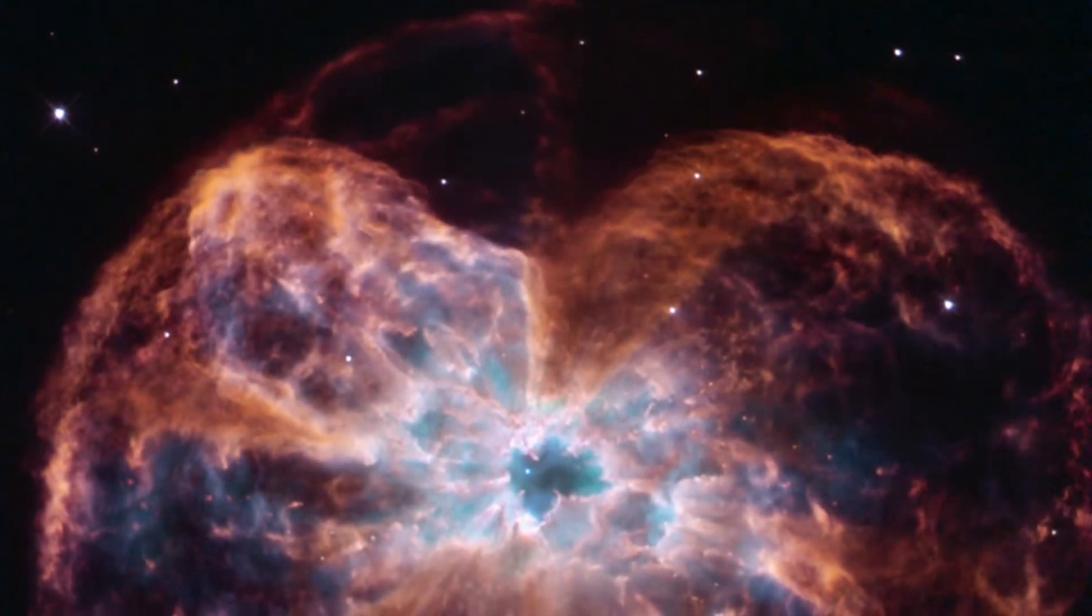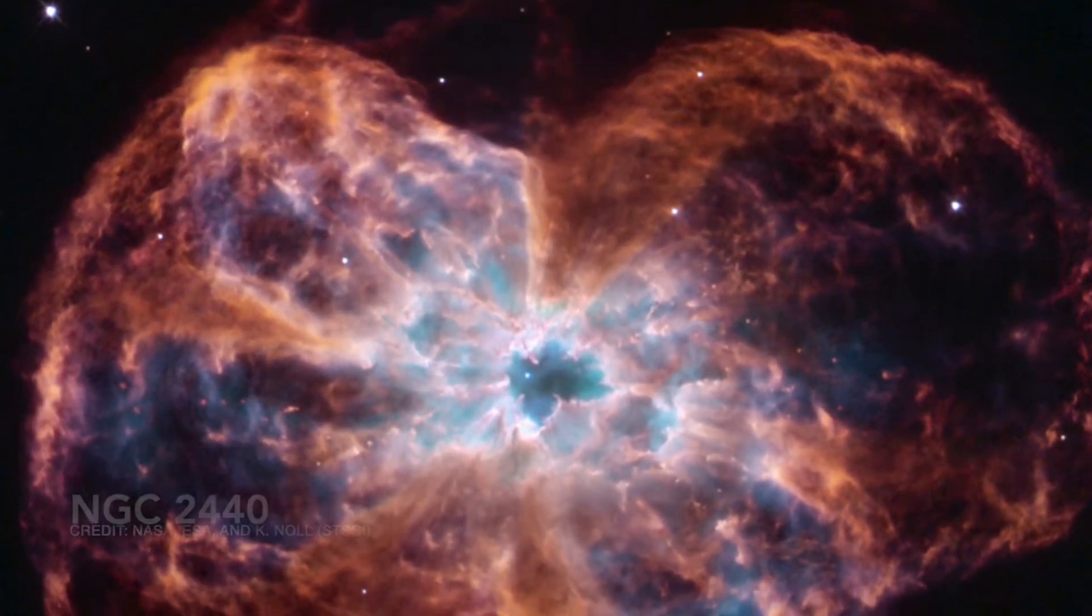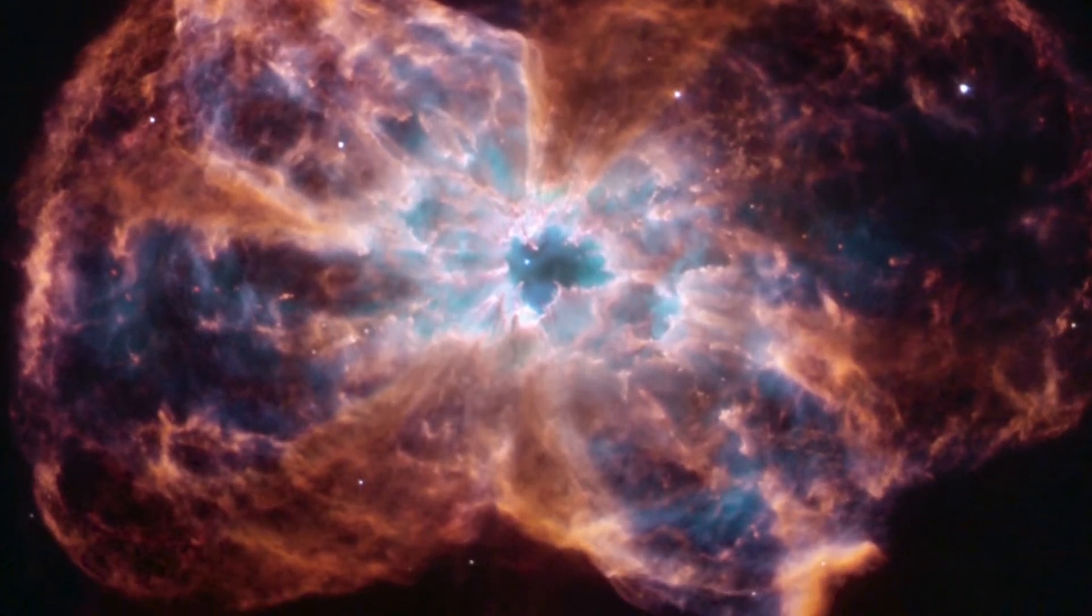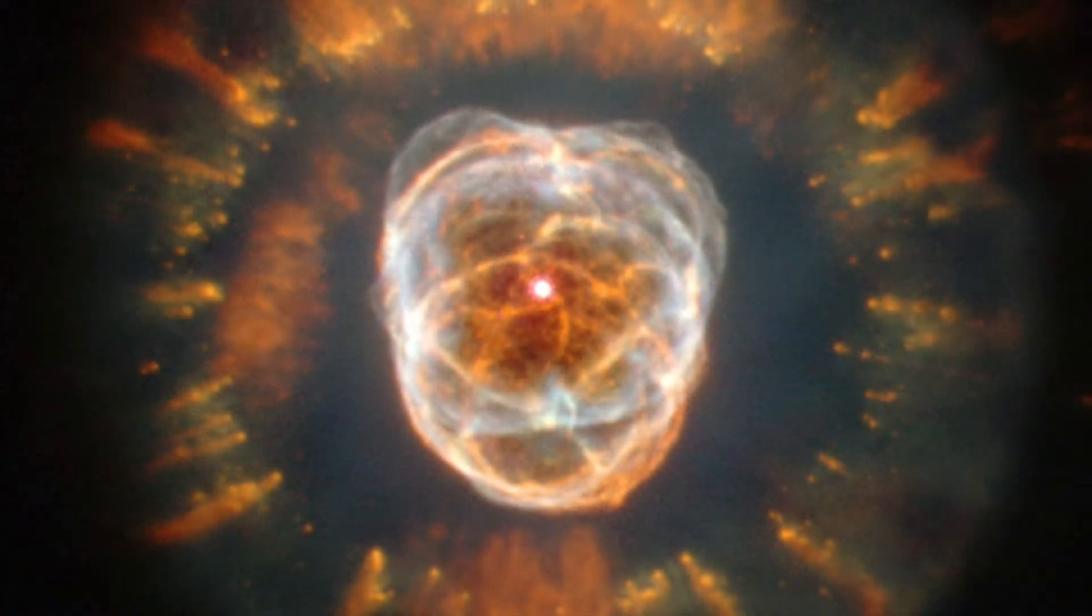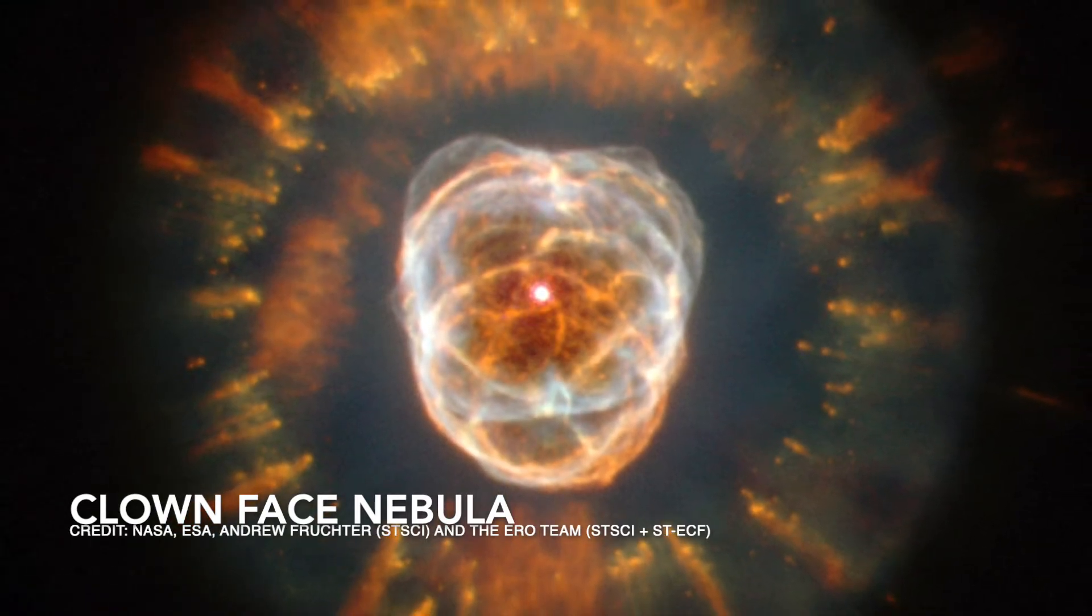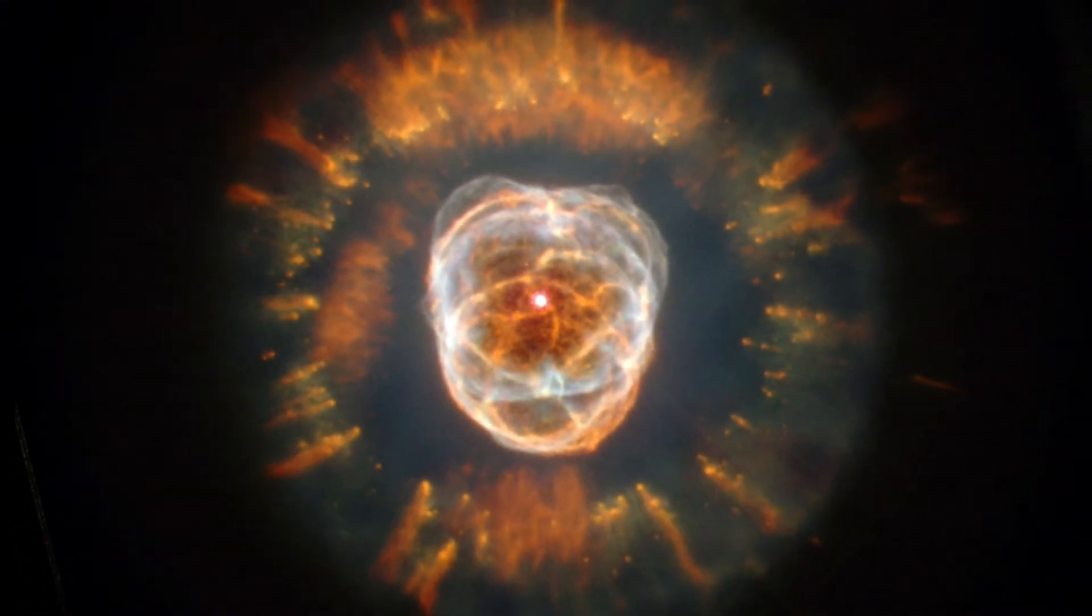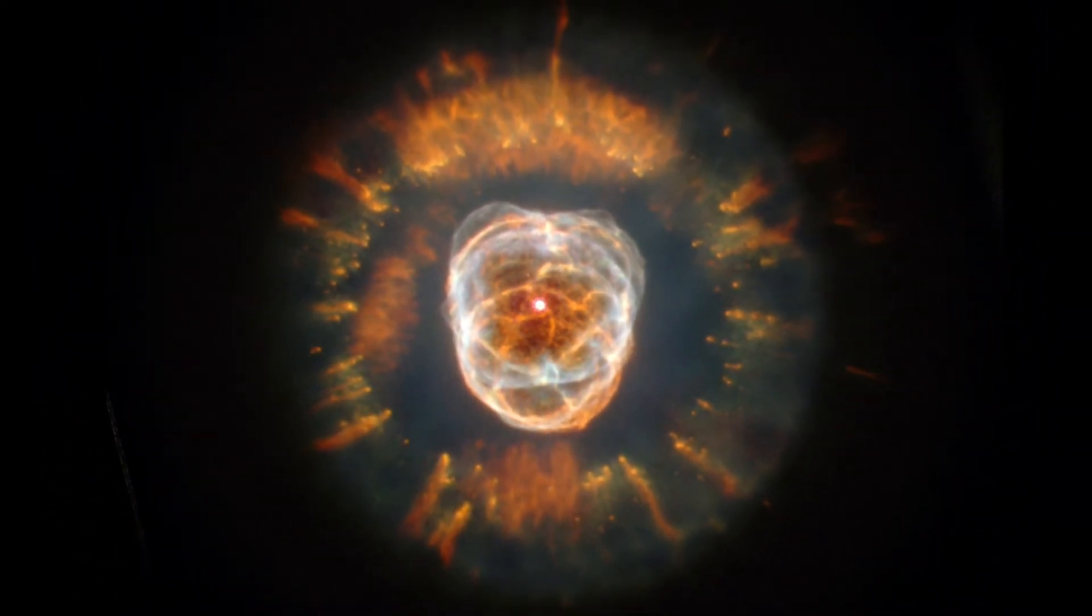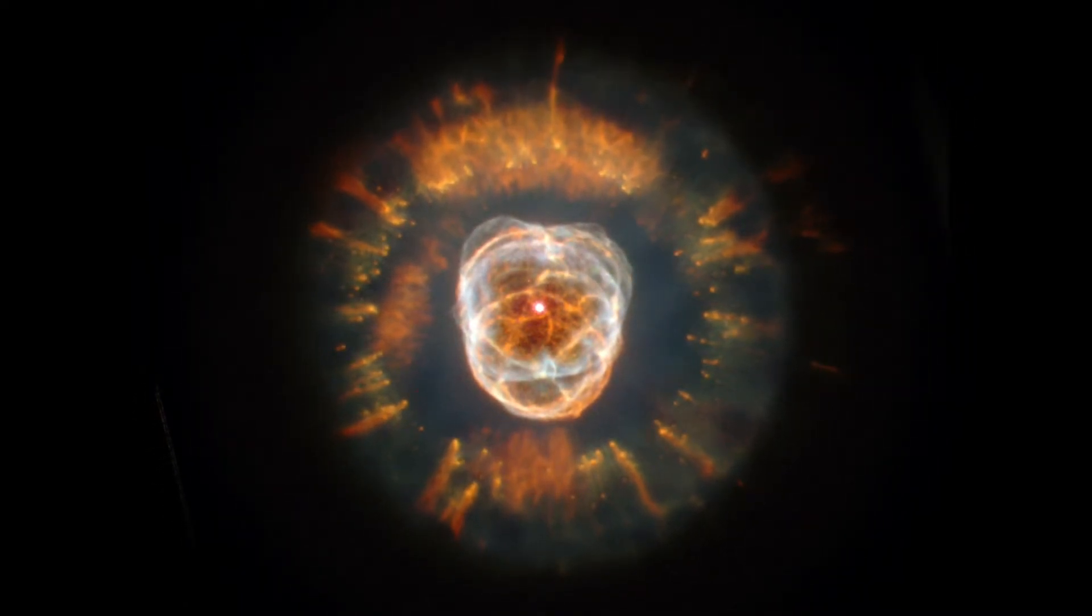Or NGC 2440, described by William Herschel himself in 1790 as a beautiful planetary nebula of a considerable degree of brightness, though not very well defined. And last but not least, the crown jewel, in my opinion, of these planetary nebulae, the Clown Face Nebula. This one in particular goes by several names, all of which fit its appearance, though some of those names might now be a bit outdated.